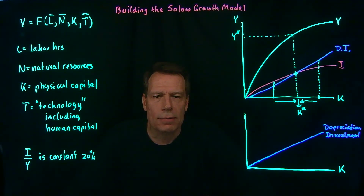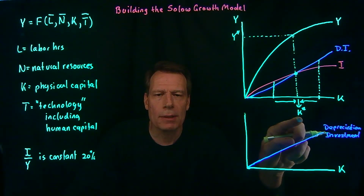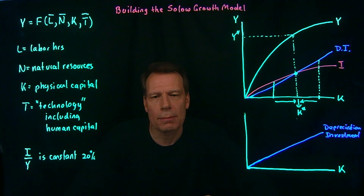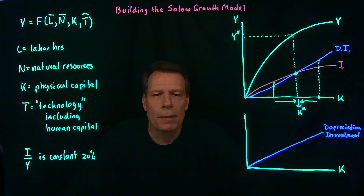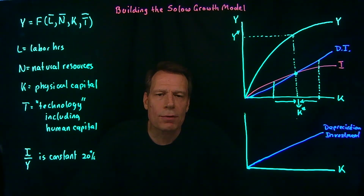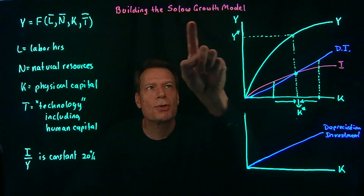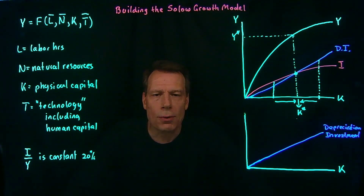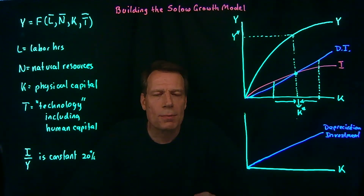So now we have a model that tells us, if labor, natural resources, and technology are held fixed, what the level of capital will be in the economy, and that determines the level of GDP. At this point, the model tells us the level of GDP, but not the growth of GDP — if nothing changes, we simply remain at that level. Something is going to have to change for economic growth to happen. This builds the foundation for what we call the Solow Growth Model, named after Robert Solow, a professor at MIT who won a Nobel Prize for this work in 1987.